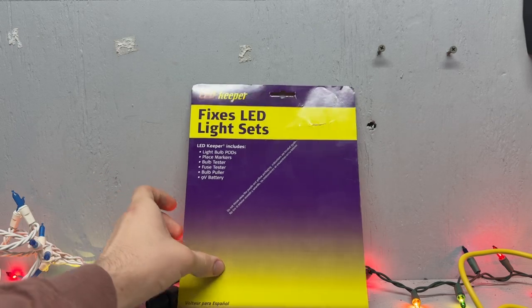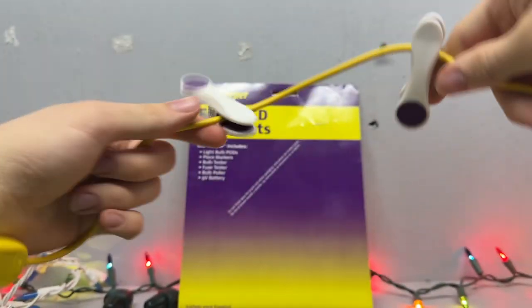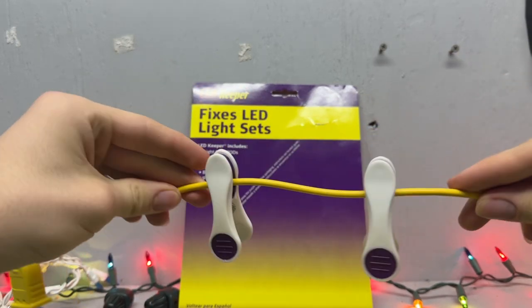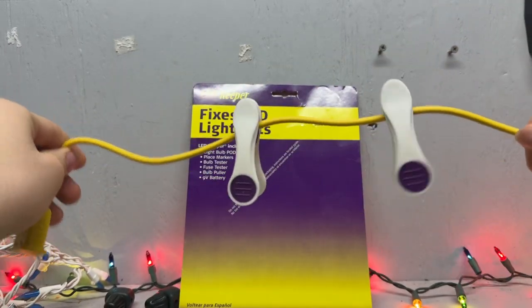It includes the pods. It includes place markers. They're pretty much clothespins. So if you lose one, you could just have a regular clothespin. I store it on the cord here, which we'll talk about later.